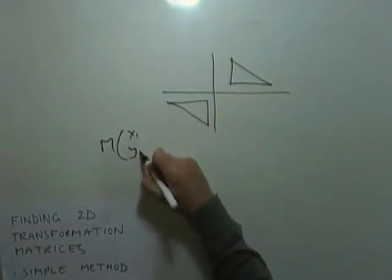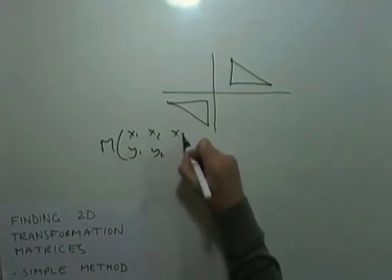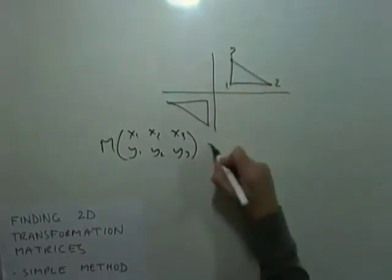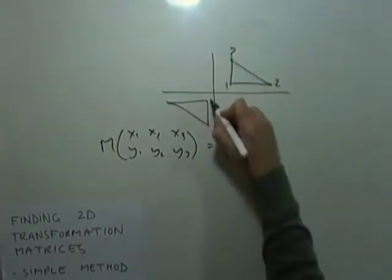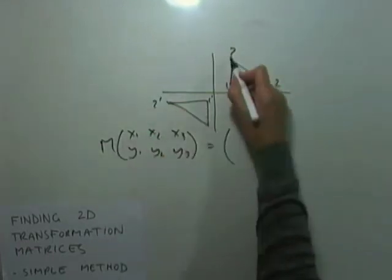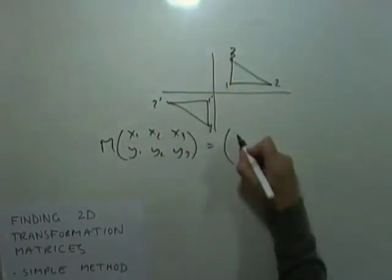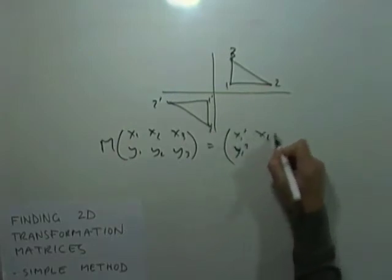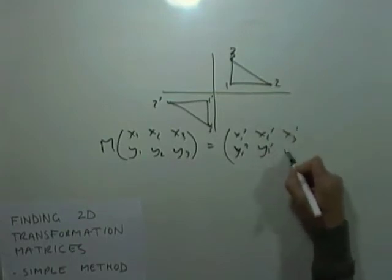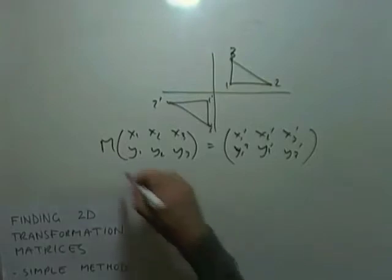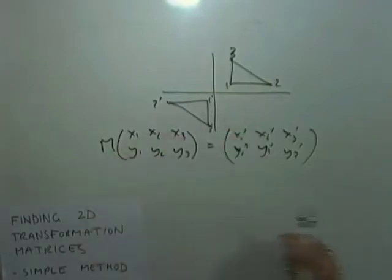x1, y1, x2, y2, x3, y3, for these three points, and turn them into their images. One dashed, two dashed, that's a bad three, three dashed, which would be x1 dashed, y1 dashed, x2 dashed, y2 dashed, x3 dashed, y3 dashed, and so on. It's finding the matrix associated with that.